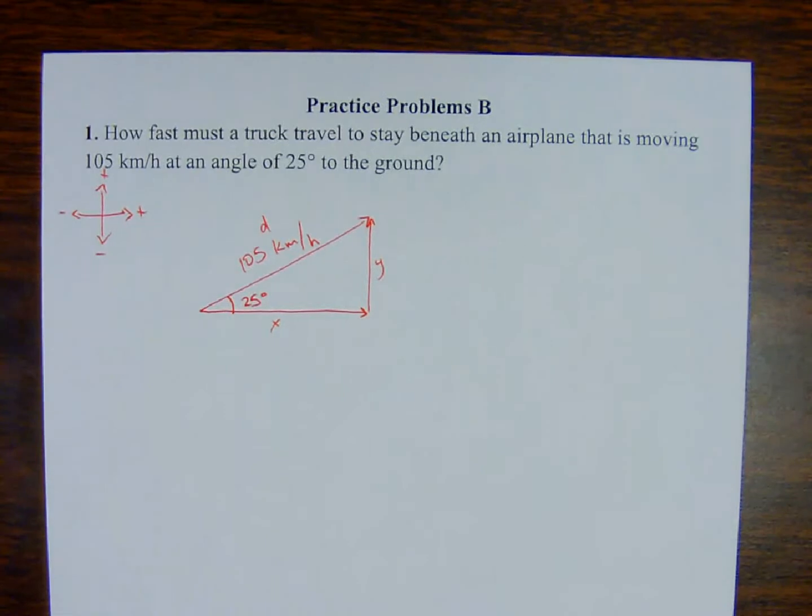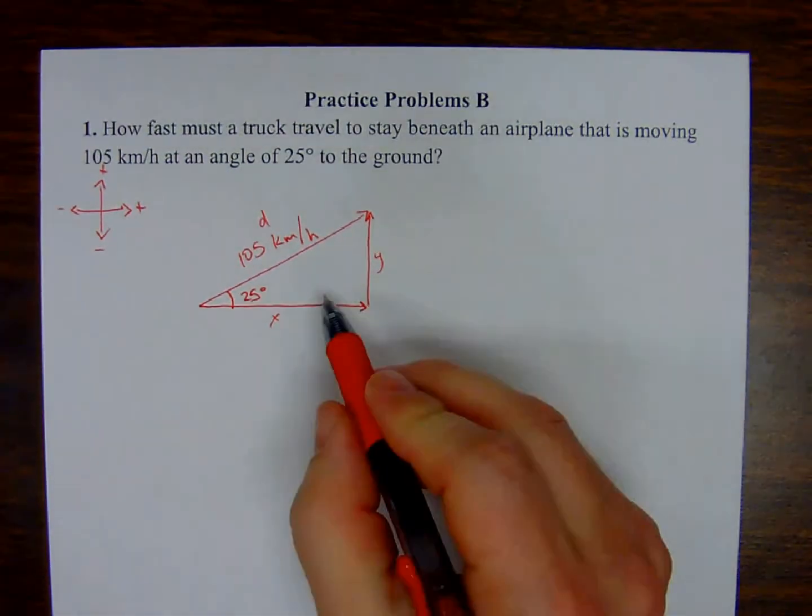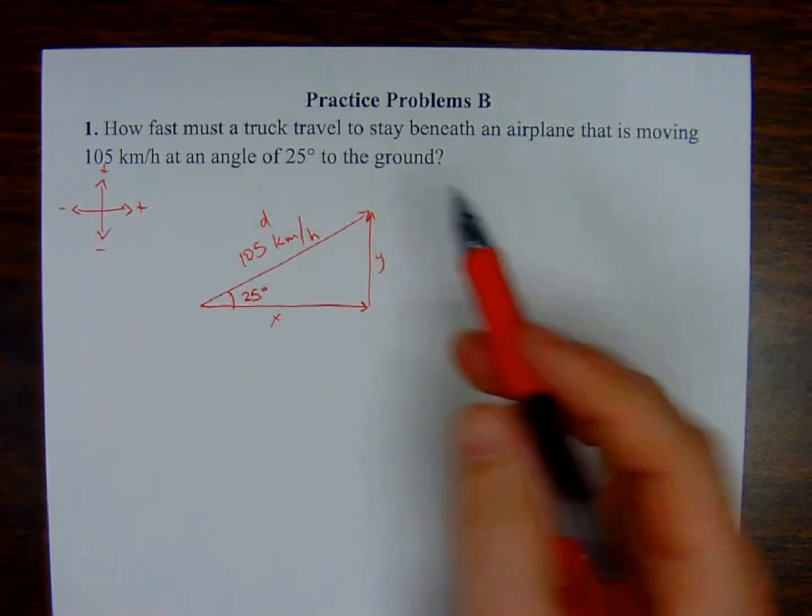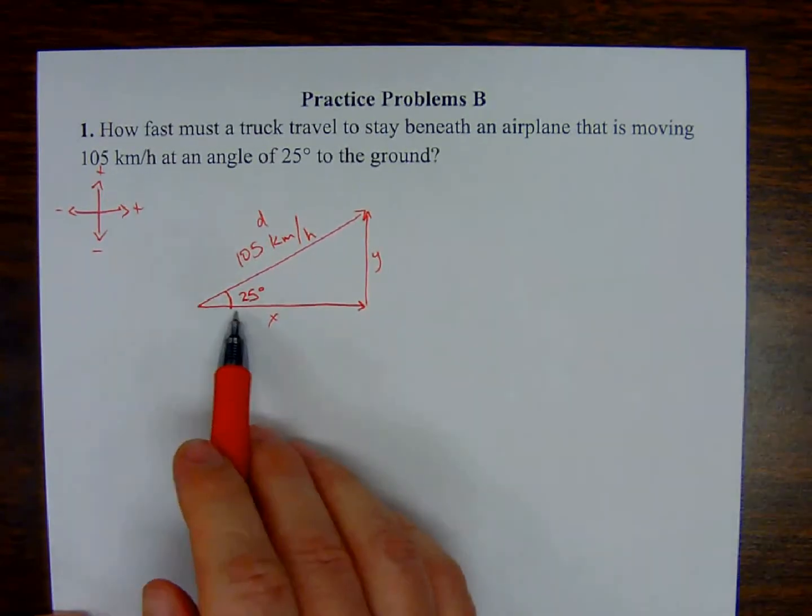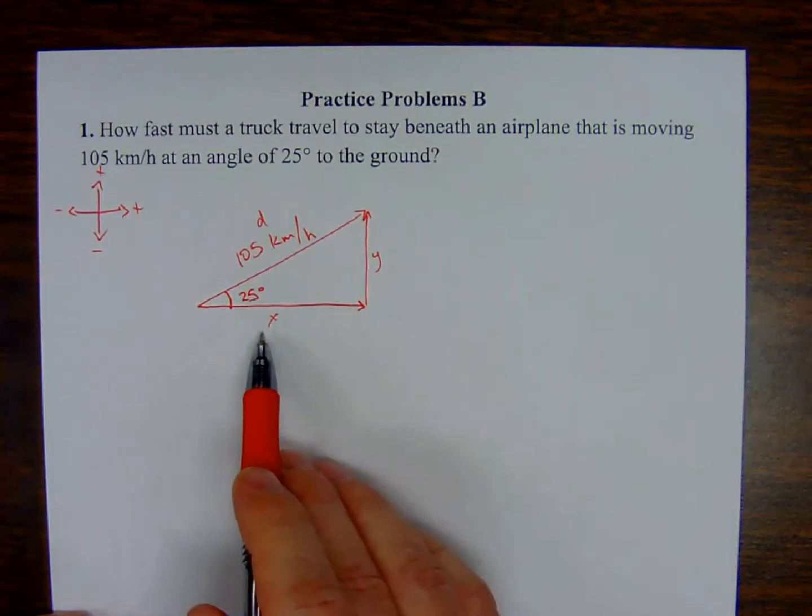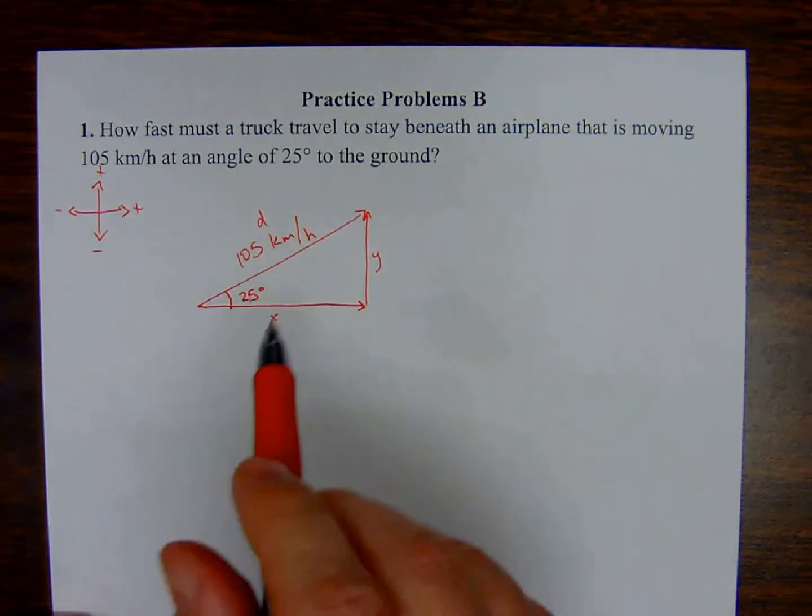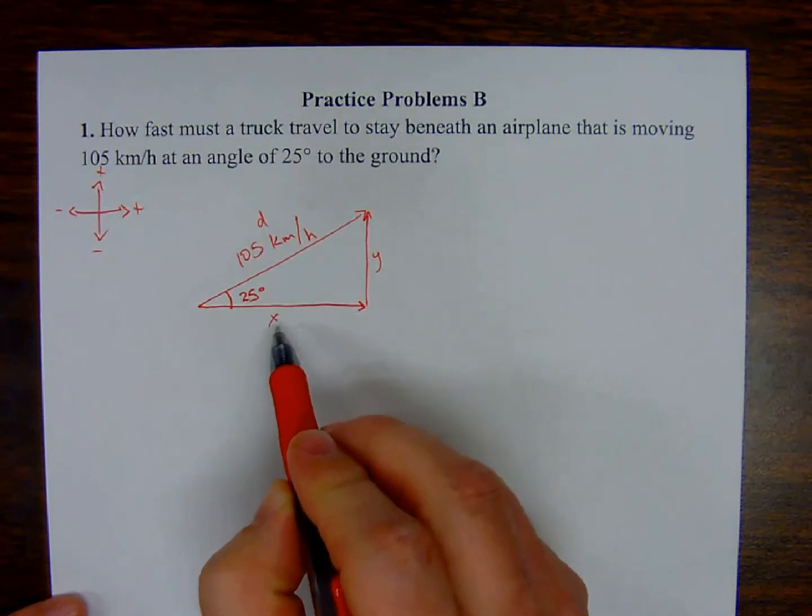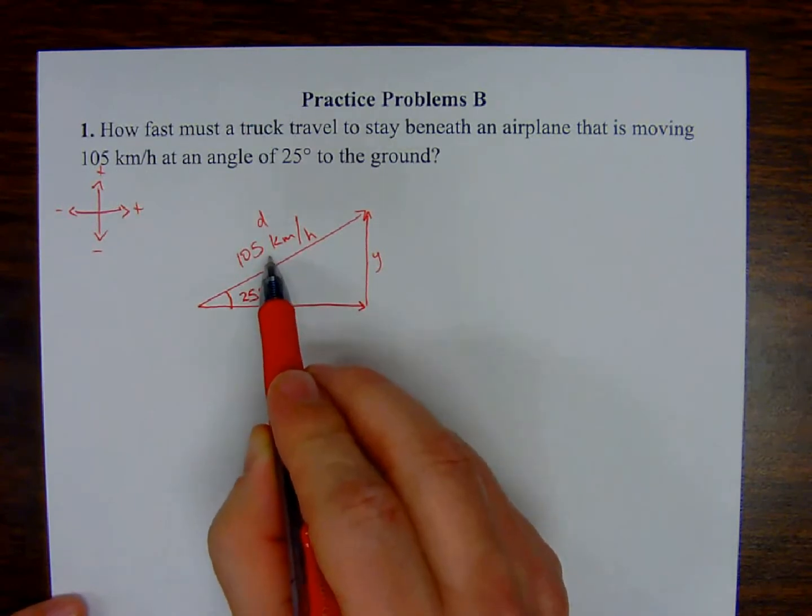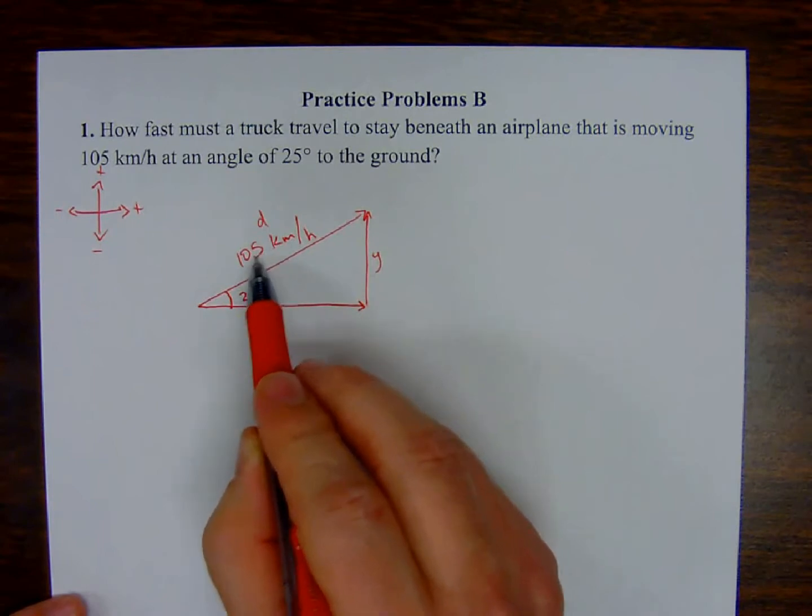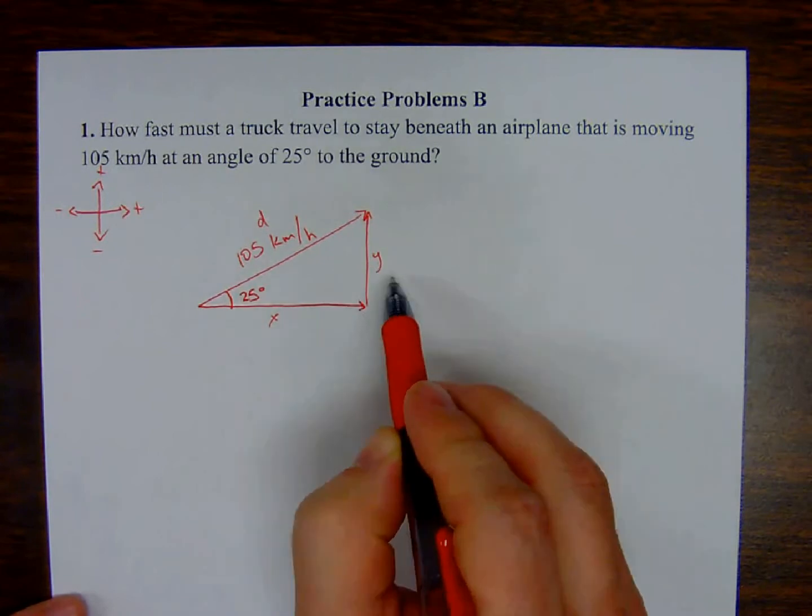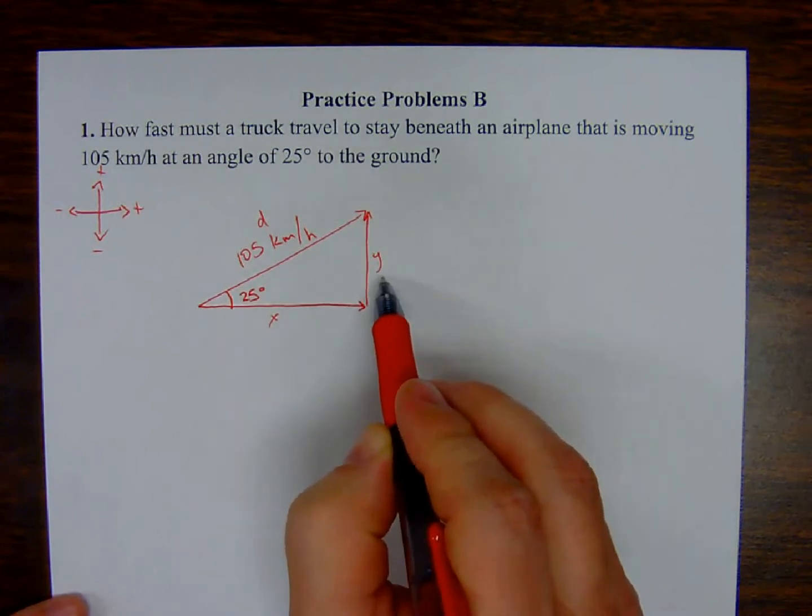And so what we're being asked to do here is look for how fast must a truck travel. You guys know that trucks don't fly. It's going to be traveling along the horizontal, that x component. So essentially, in terms of the math, what we're being asked to do is find out what the x component of this resultant is, to resolve this resultant into its x component specifically. Actually, number two will find the y component. But for number one, we're just going to stick with the x component.